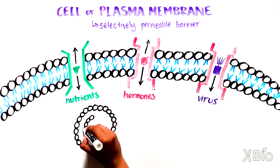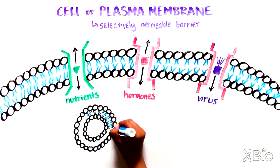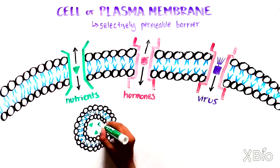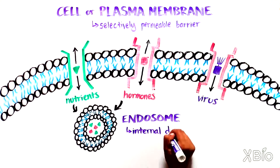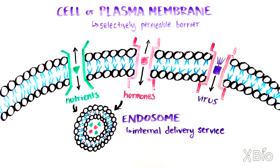Once the materials are through the plasma membrane, some end up in another membrane-bound organelle called an endosome, or an internal delivery service. The endosome can deliver the material to many other organelles that we will learn about soon.